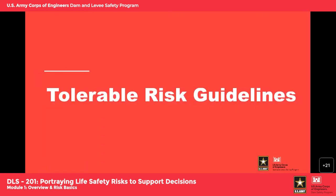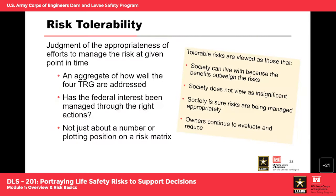Moving into tolerable risk guidelines: risk tolerability is essentially a judgment of the appropriateness of efforts to manage risk at a given point in time. It's an aggregate of how well the four TRGs have been addressed — we're asking whether the federal interest has been managed through the right actions. It's not just a number or a plotting position on a risk matrix; we want to look at all components and ensure we're doing the best we can to manage and reduce risks.